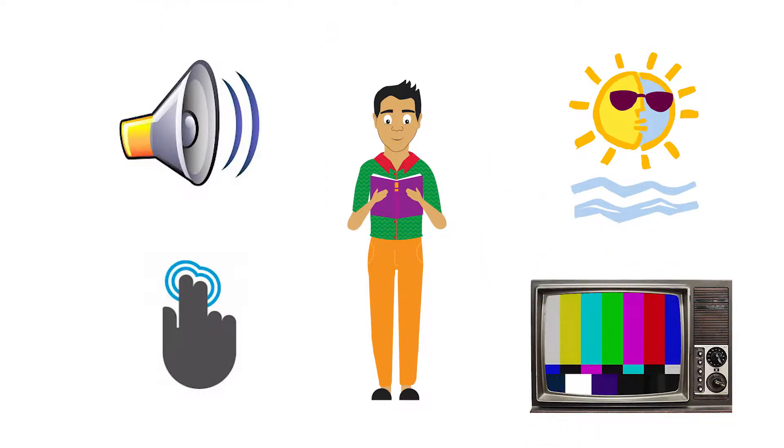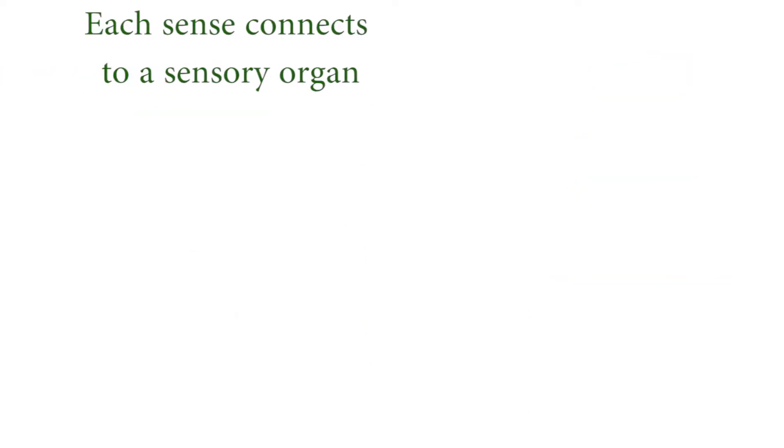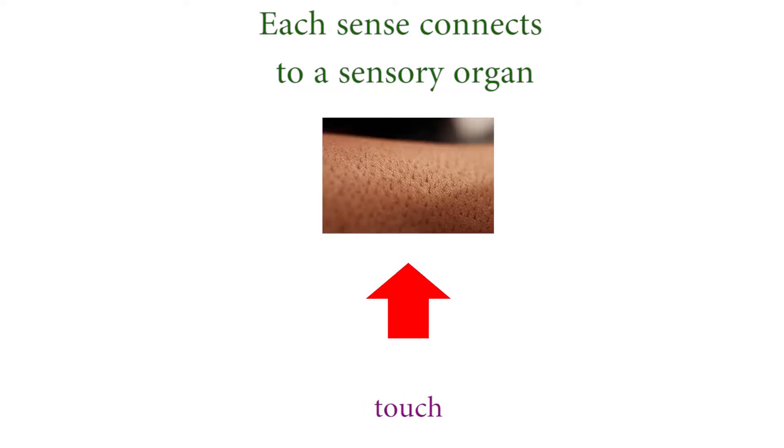Each sense connects to a sensory organ. Sight is connected to the eyes, sound is connected to the ears, smell is connected to the nose, taste is connected to the tongue, and touch is connected to the skin.